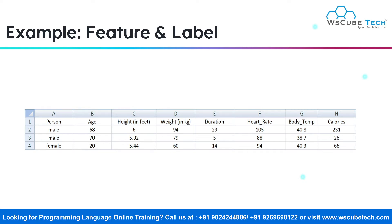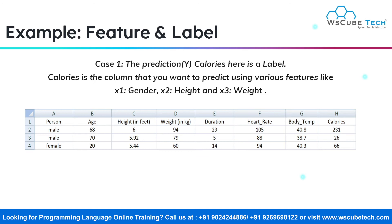Now, depending upon your goal, your features and labels are going to differ. You need to first find out what type of model you want to design and what it's going to predict for you. We are going to consider two cases. In case one, say you want to predict the calories burned by a person during exercise. Here, the features you're going to consider are gender, height, and weight. What you want to predict — the calories burned during exercise — is the label. So calories is the column you want to predict using those features: gender, height, and weight.